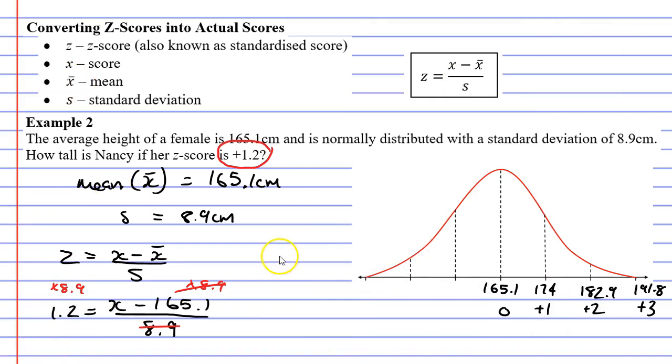So on the left side, I have 10.68, and then on the right side, I have x minus 165.1. Next I need to add the 165.1 to both sides. This will cancel out the 165.1 on the right.